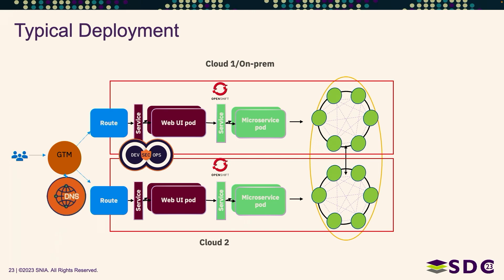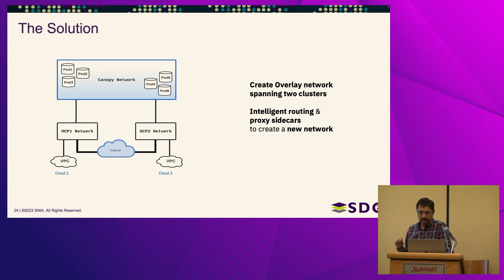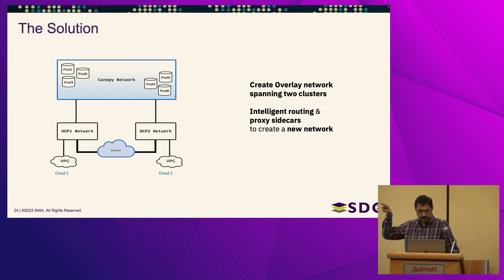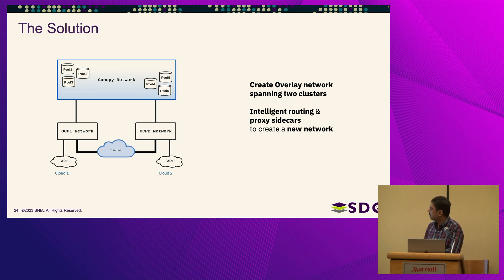We don't want to expose the whole cluster to another cluster, to reduce security risk. The way we solve it is what we call an overlay network, built on top of the existing network of your OCP or Kubernetes. Within this overlay network, cloud one uses its own network internally and cloud two uses its own. In between, we have a solution that goes through a service mechanism to a specific pod using intelligent routing and proxy pods.